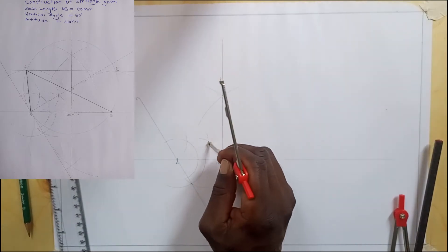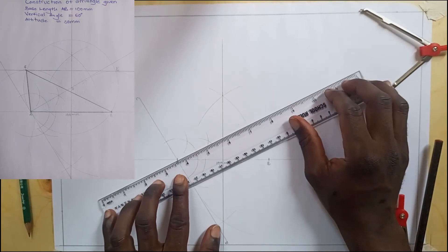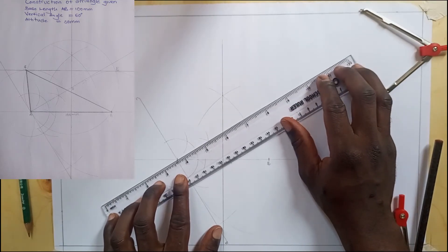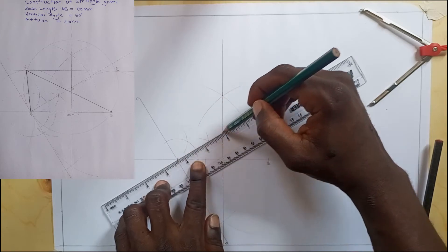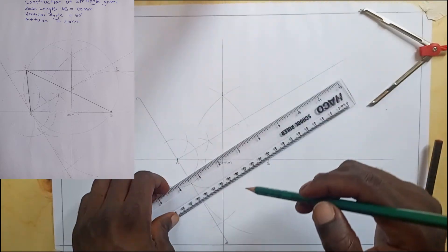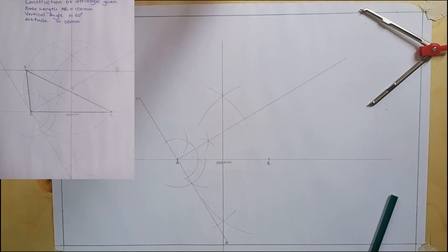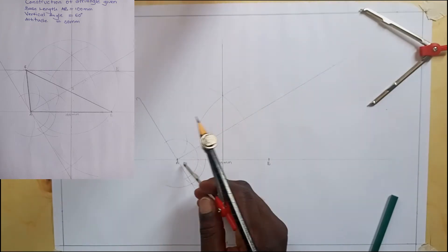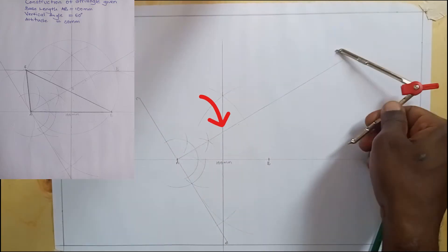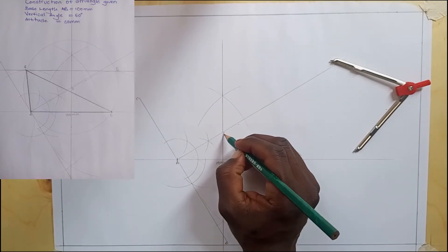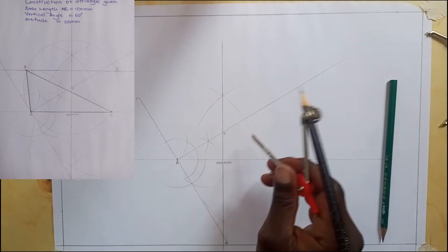When you're done, you draw this line which is the perpendicular. Where these two perpendiculars meet at this point, we shall call it O. It's the center of the circle that we are going to draw.